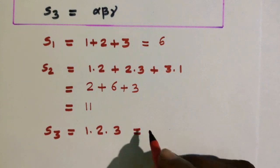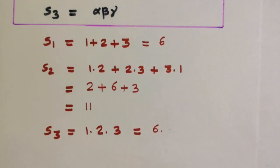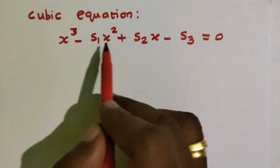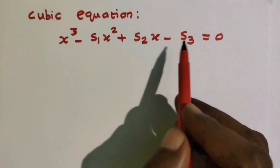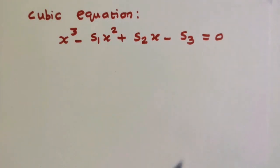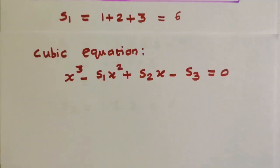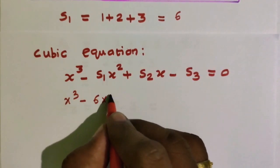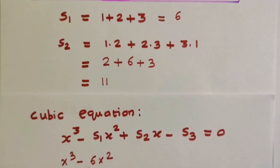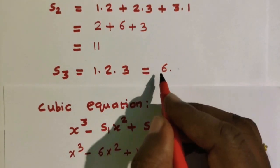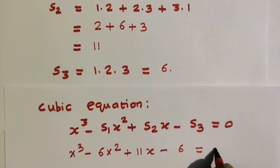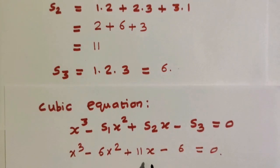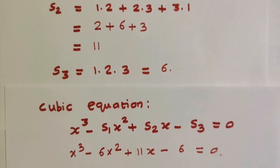Next, s3 is the product of the roots: 1 into 2 into 3, which is equal to 6. Now substituting into the cubic equation: x cube minus s1 x square plus s2 x minus s3 equals 0. So x cube minus 6x square plus 11x minus 6 is equal to 0. This is the cubic polynomial equation whose roots are 1, 2, and 3.